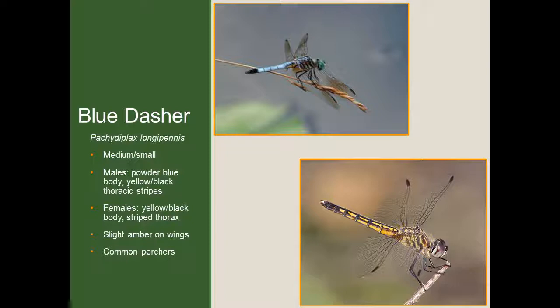The blue dasher is another small, bluish species that in some cases can be confused with the eastern pond hawk, though these are a little bit smaller. The males have that powdery blue color on the abdomen but not across the whole body — if you look closely, the thorax of the male has black and yellow stripes. Females also have black and yellow stripes on the thorax, and the abdomen is blackish and yellowish in color. Sometimes in the males you'll also find a very small amount of amber on the wings. These are also common perchers.